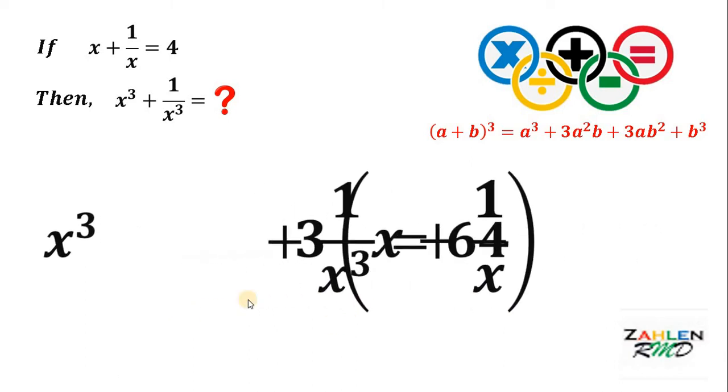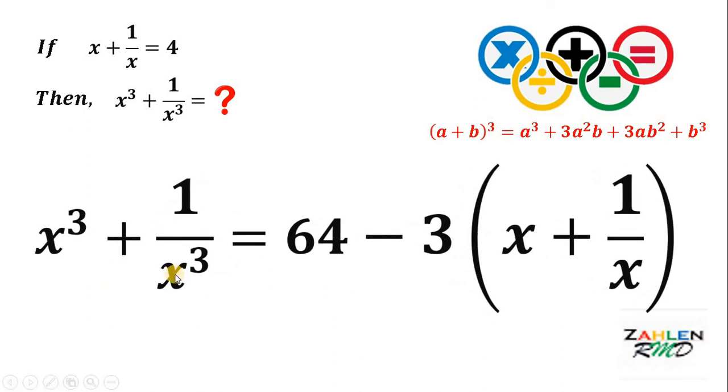If we do that, we get x cubed plus 1 over x cubed, and that's what we want, equals 64 minus 3 times x plus 1 over x. Take note that x plus 1 over x is given which is equal to 4. So, we can replace x plus 1 over x with 4.